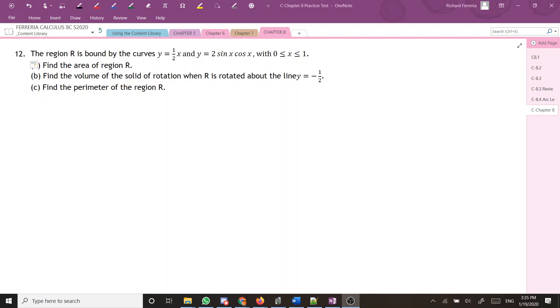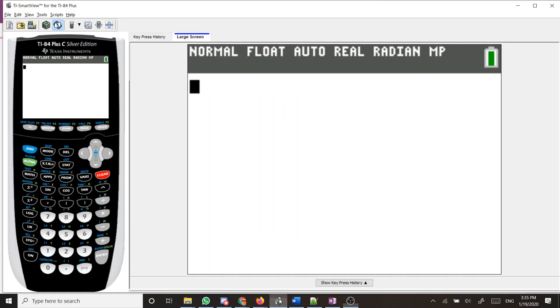Okay everybody, we're on the last question of the practice test for chapter 8. This is number 12. We want to find the region R bound by the curves y equals 1 half x, y equals 2 sine x cosine x, with x going from 0 to 1. So the very first thing you're going to want to do if you are given a calculator is to graph this so we know exactly what region we're talking about.